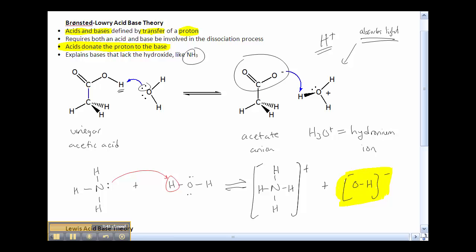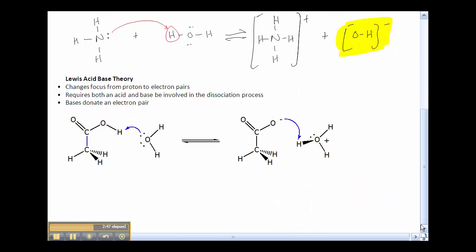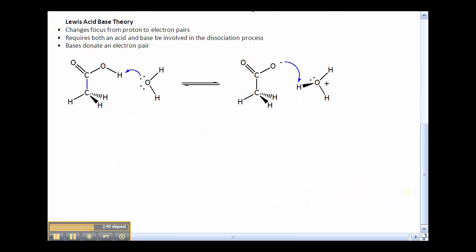A similar theory is called the Lewis acid-base theory. All you're really going to do here is change your focus from the proton to the electron pairs, which we're already kind of mixed up in anyways. If we take a good look at this, there's going to be a new definition where the base is the thing that donates—in this case it donates an electron pair.